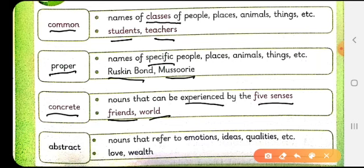Then we have the abstract noun. Now as I said before, we have segregated sympathy in the column abstract noun. Now the word sympathy can only be felt and cannot be touched or experienced by our five senses. So all those nouns that refer to emotions, ideas, qualities etc. are termed under abstract nouns. For example, love, wealth and many more like this.